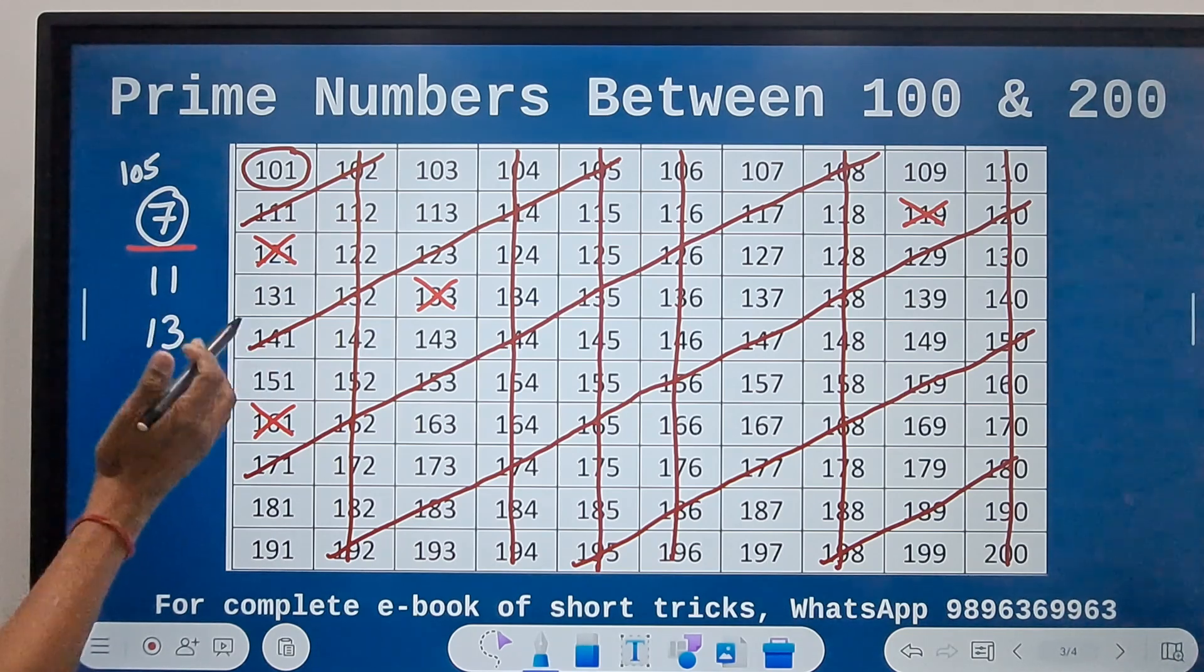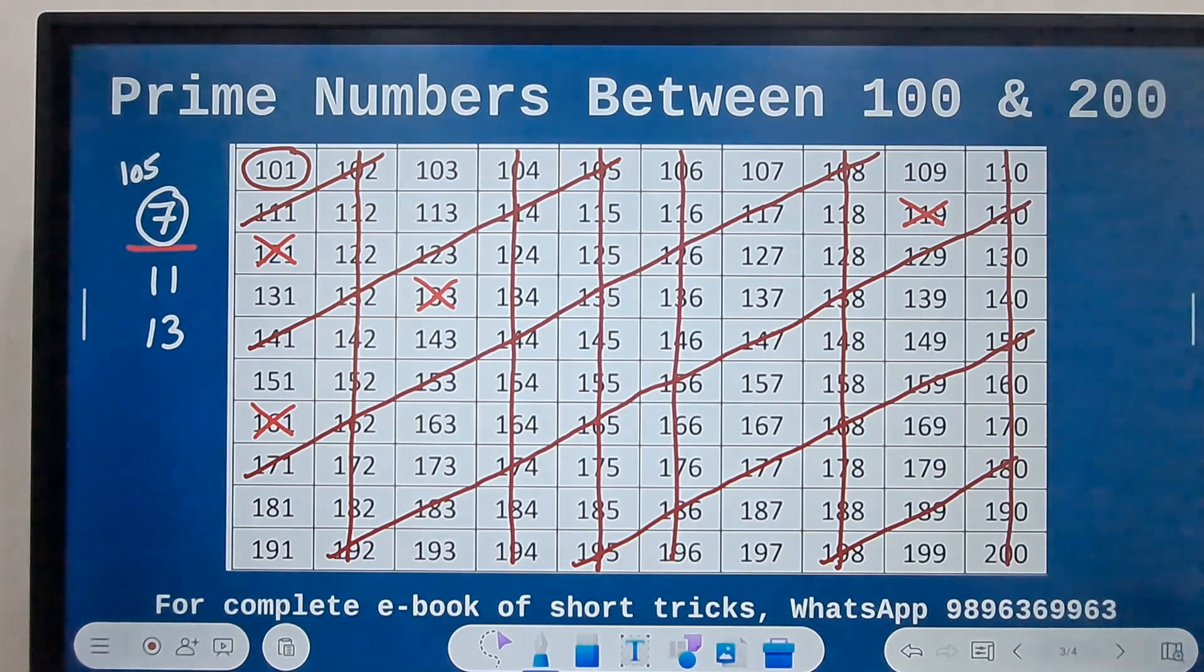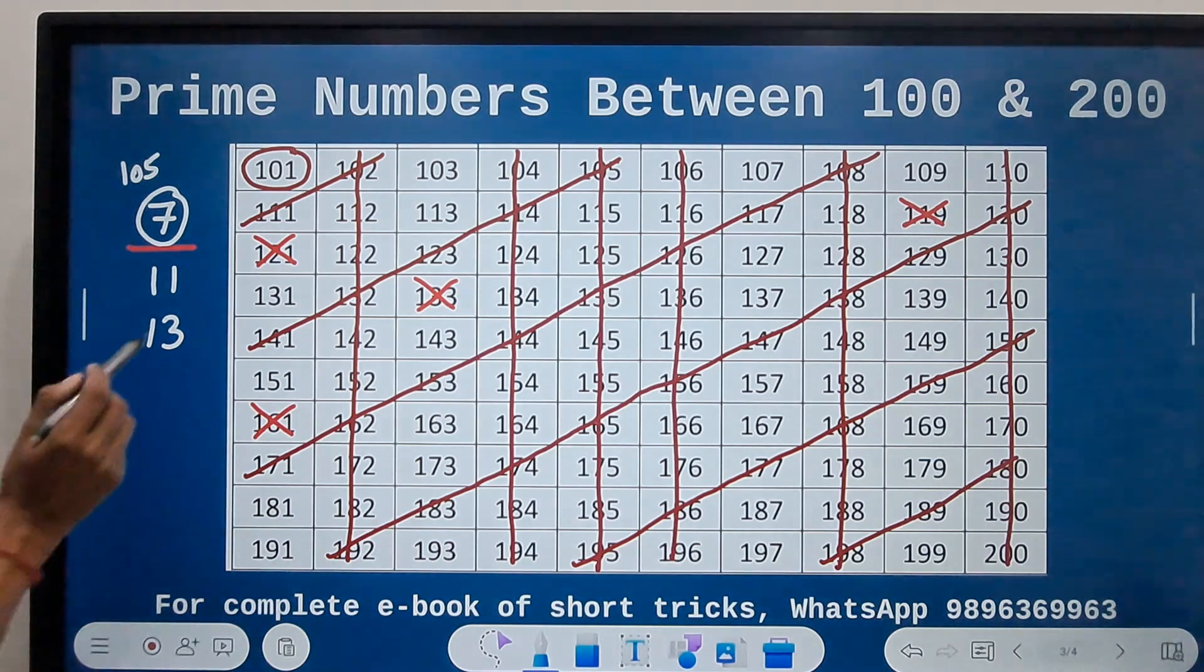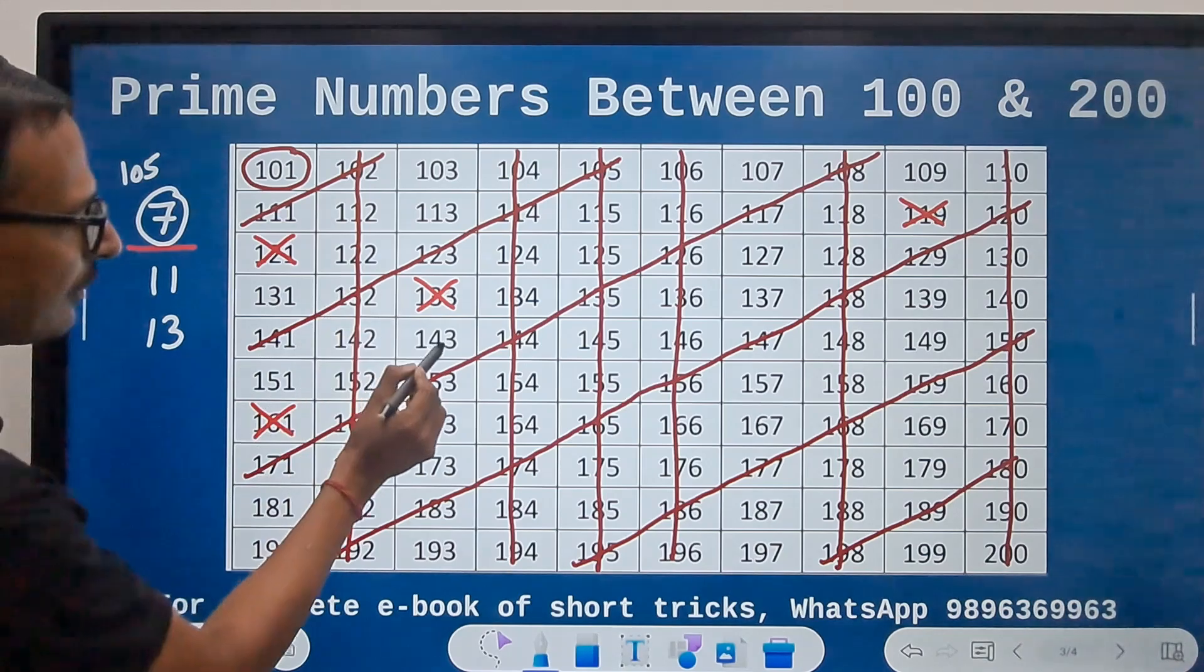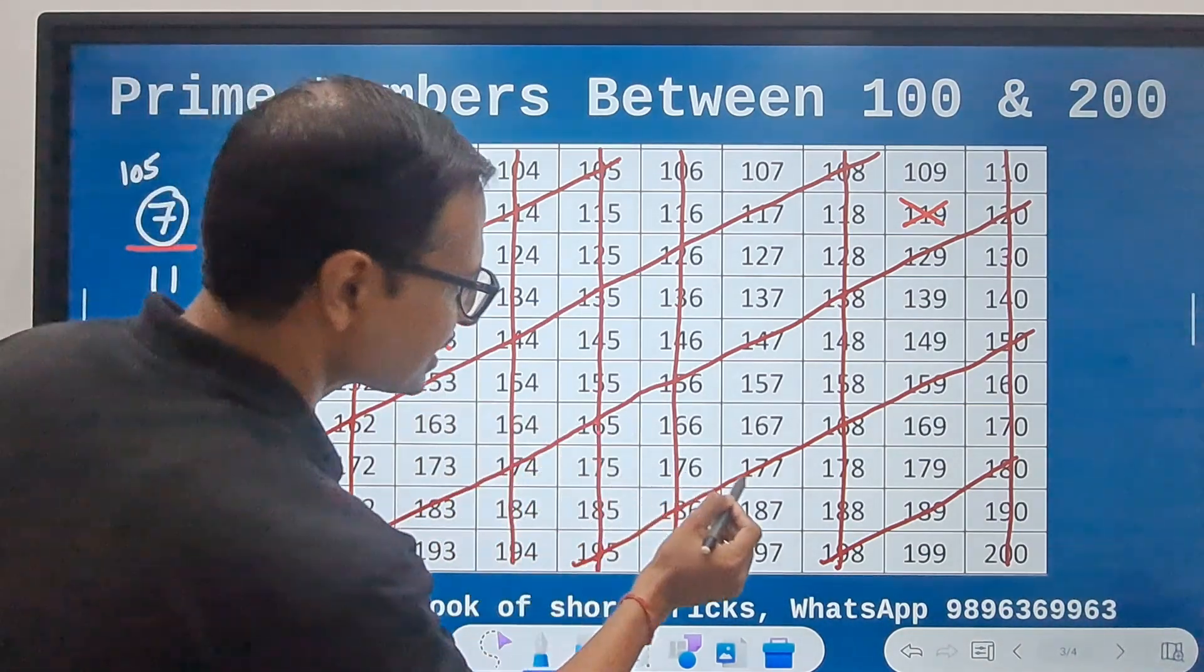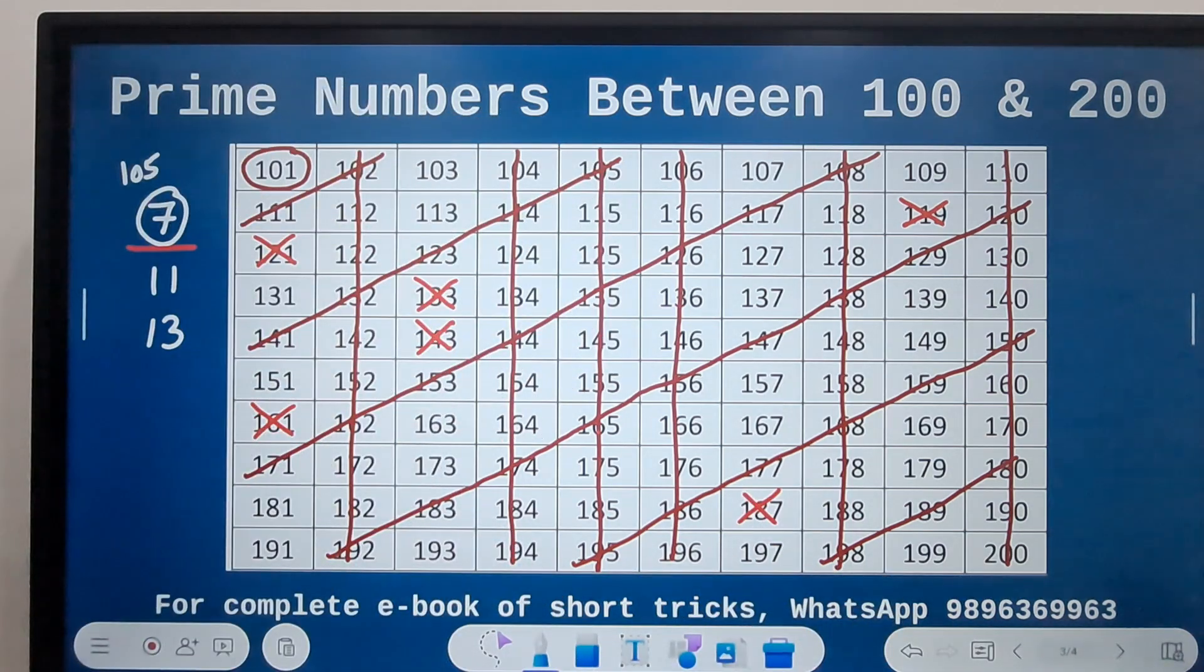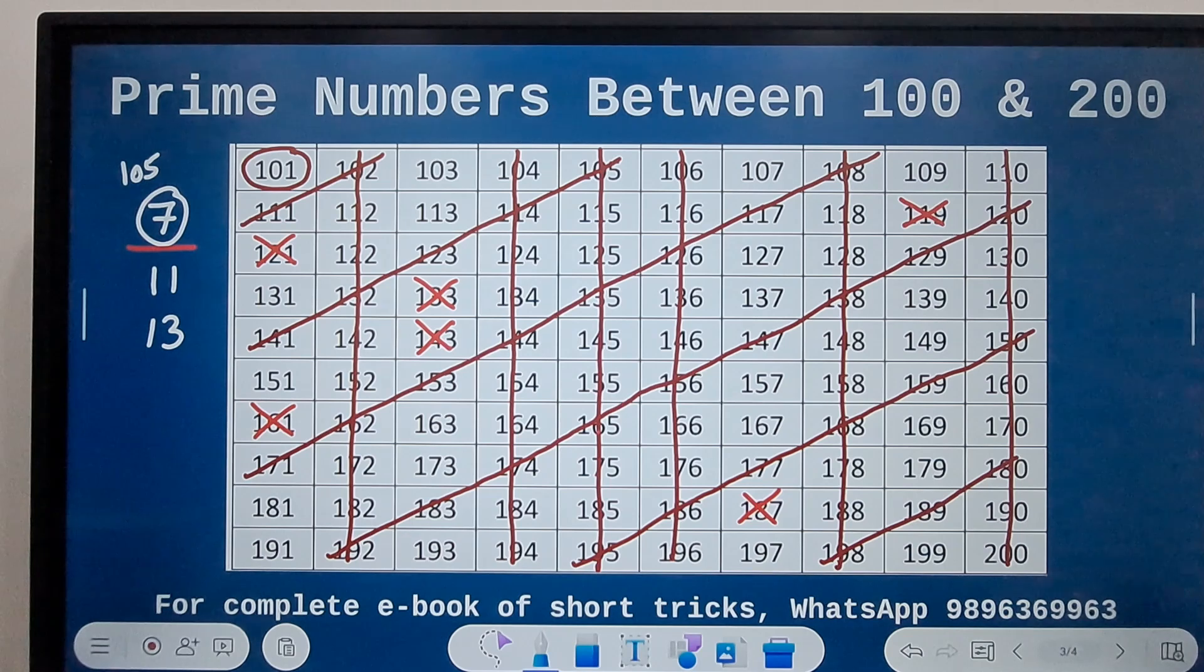Now you can see the diagonal elements. They are all divisible by 11. So 121, 132, 143, 154, 165, 176, 187, and 198. They are ruled out.